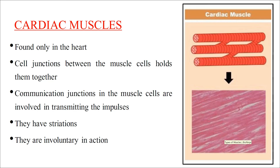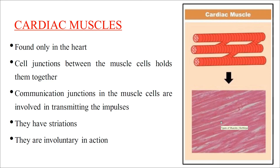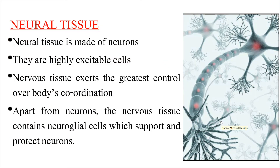Cardiac muscles are found exclusively in the heart. Cell junctions hold the muscle cells together and they communicate through these junctions, transmitting impulses. Cardiac muscles have striations and are involuntary in action.